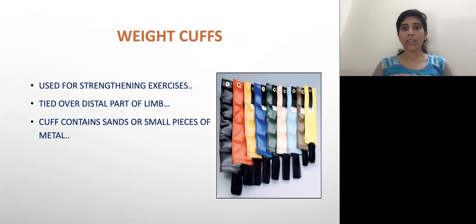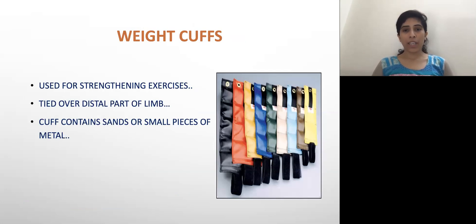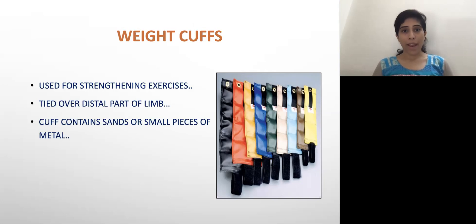It is called weight cuffs. Various sizes and shapes of weight cuffs are available. They are mainly made up of canvas material, or sometimes available in denim material, with many other material types as well. They are used for strengthening exercises and are mainly tied to the distal part of the extremity, whether upper or lower. They contain sand or small pieces of metal.